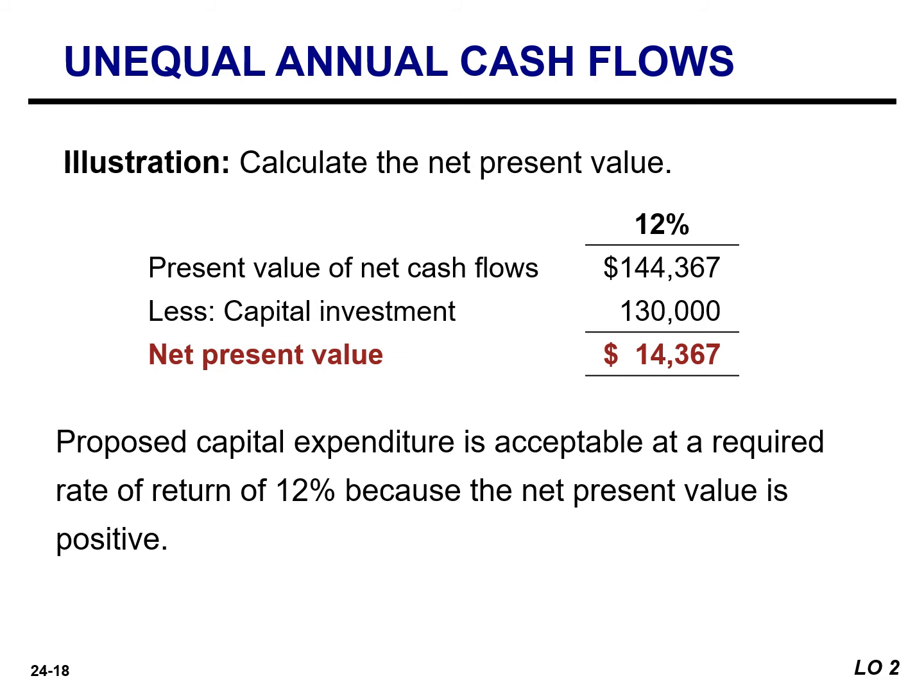The difference between the present value under equal cash flows ($135,605) and unequal cash flows ($144,367) is due to the pattern of cash flow. Since more money is received sooner under the uneven cash flow scenario, its present value is greater.